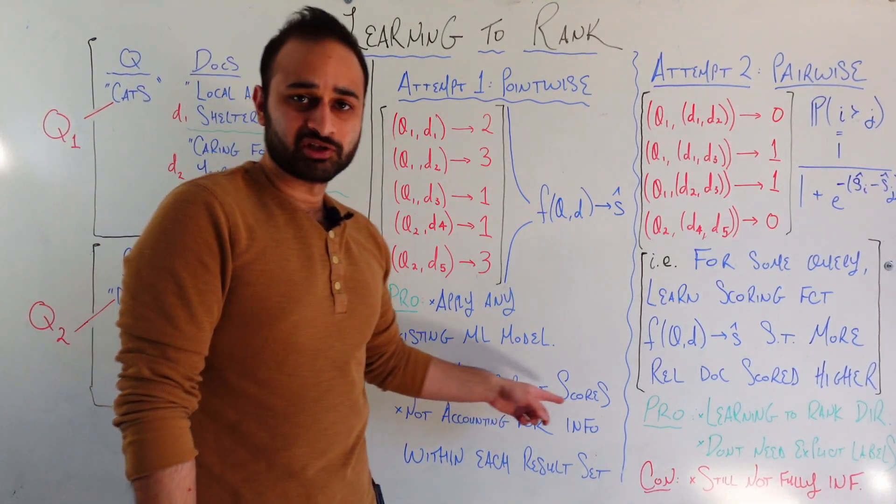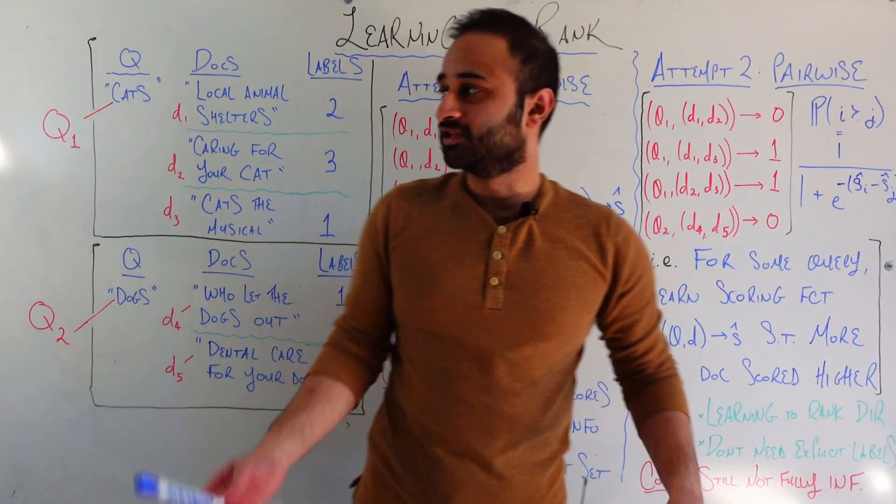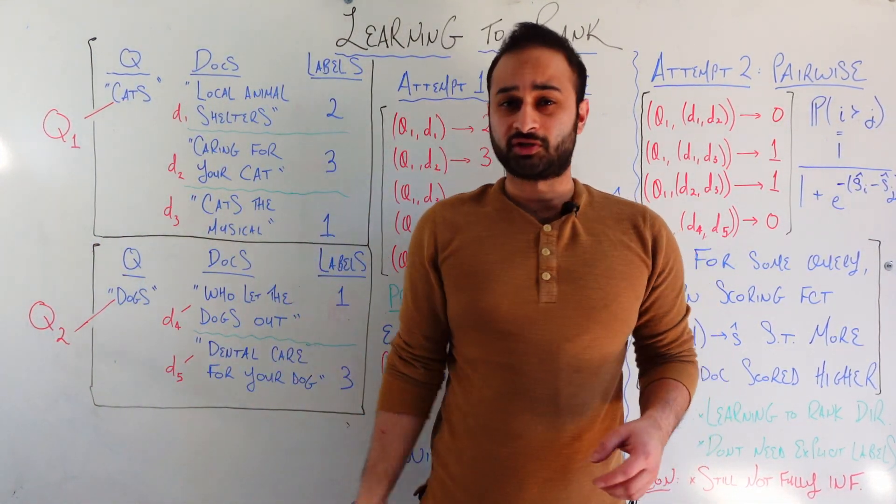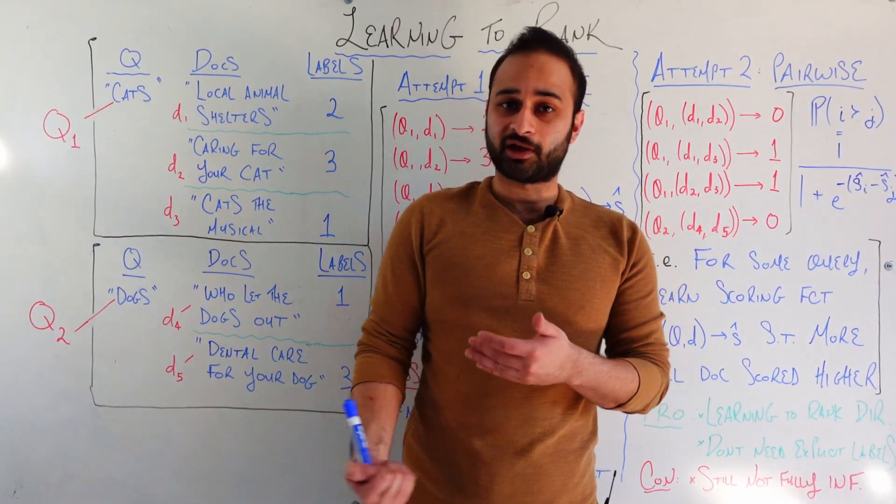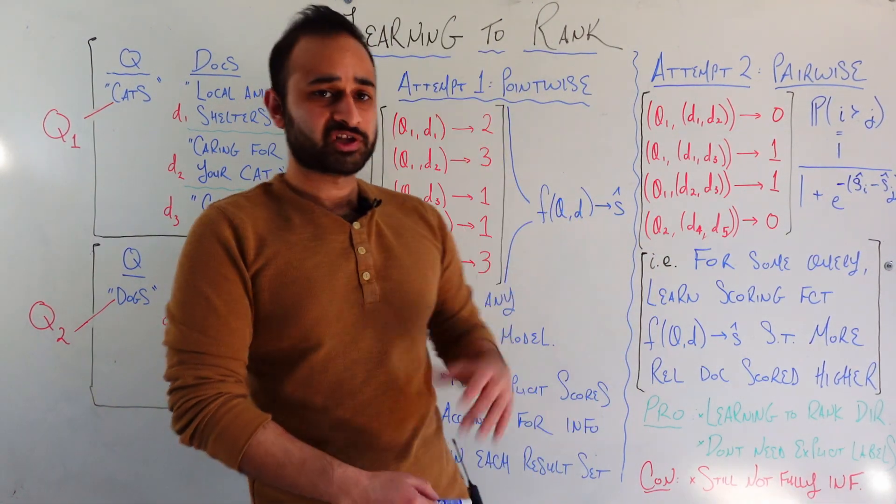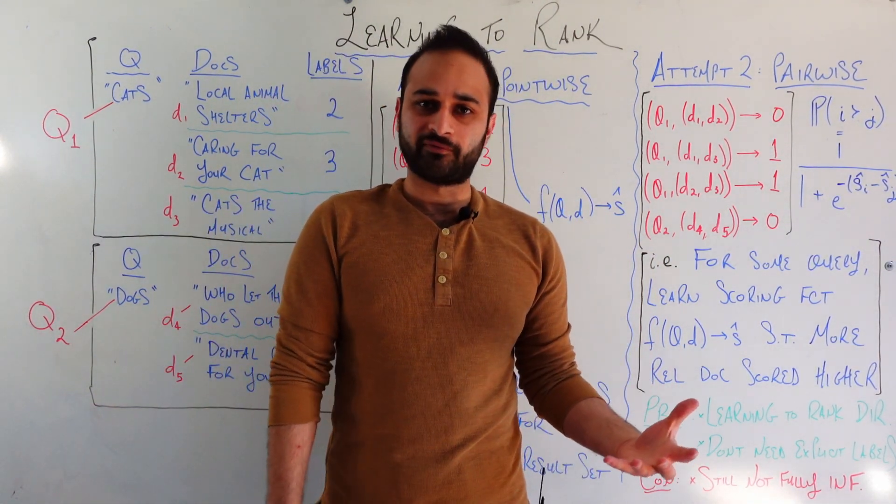The other issue here is that we need explicit scores. As we were talking about before, these labels could be a little bit tricky to grab accurately. And we need these labels in order to use the point-wise method. Let's move on to the next step of this learning to rank, which is the pairwise method.